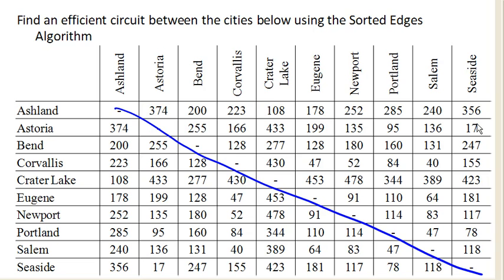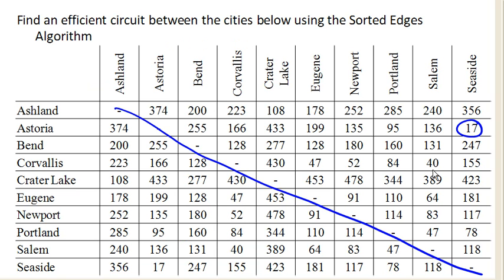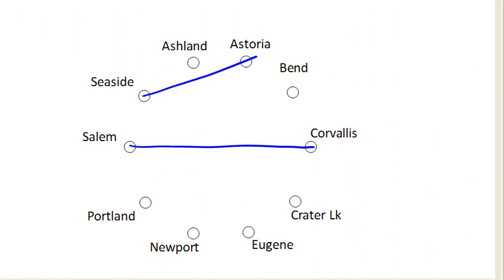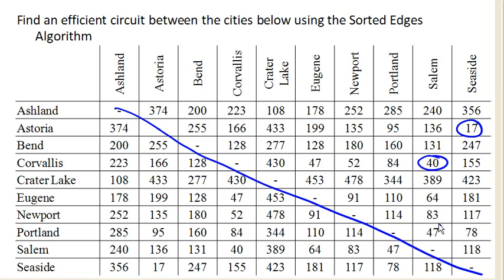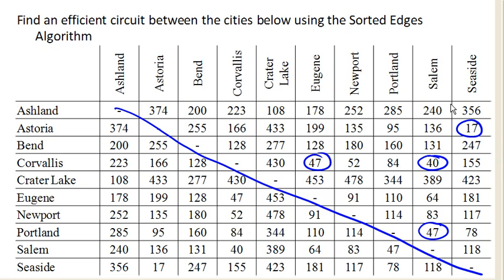I start with my cheapest edge, which is Seaside to Astoria, so we'll go ahead and connect those. Then my next cheapest is Salem to Corvallis, and then Portland to Salem and Corvallis to Eugene — both okay to add. Notice that Salem and Corvallis both have degree 2 at this point, so we're not going to want to add any other edges that connect to them. We can pretty much ignore anything that links to Salem or Corvallis from here on.